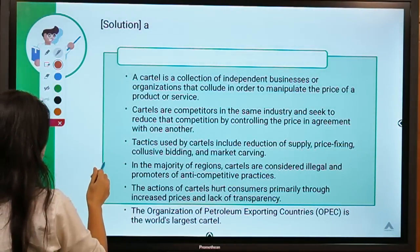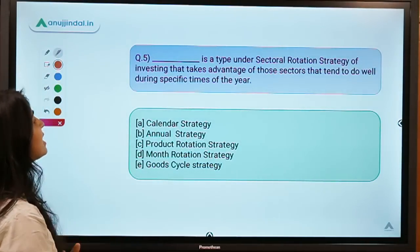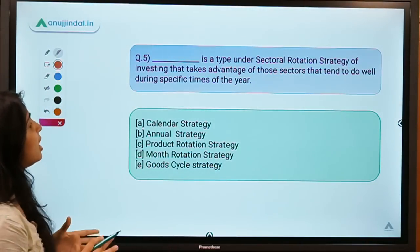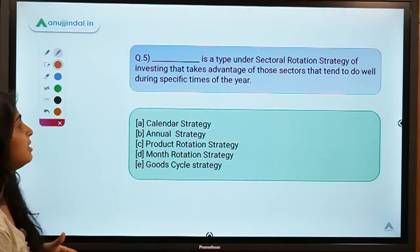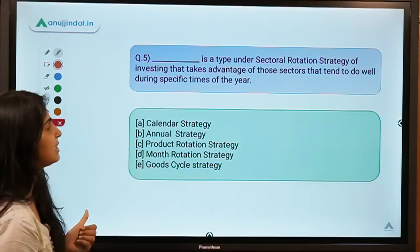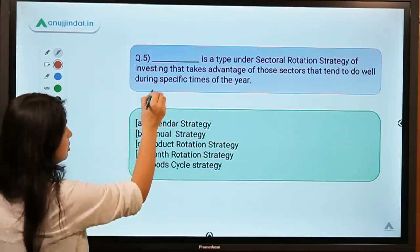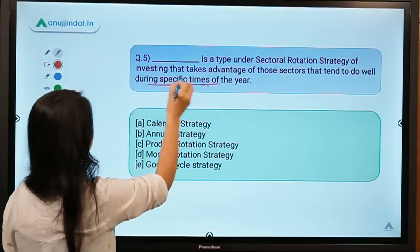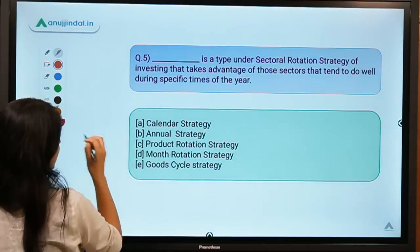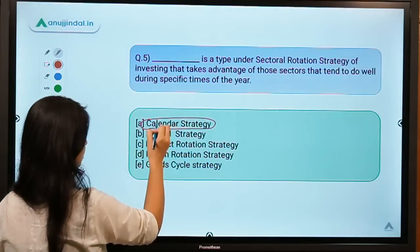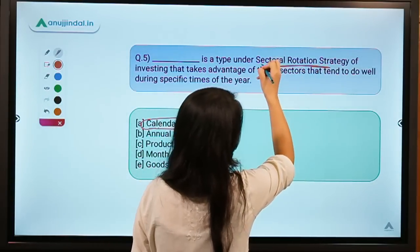Here is the last question for today. The blank is a type of sectoral rotation strategy of investing that takes advantage of sectors that tend to do well during specific times of the year. The key term is 'specific times of the year.' The correct answer is option A: calendar strategy.